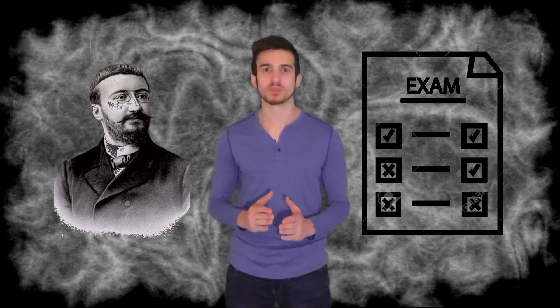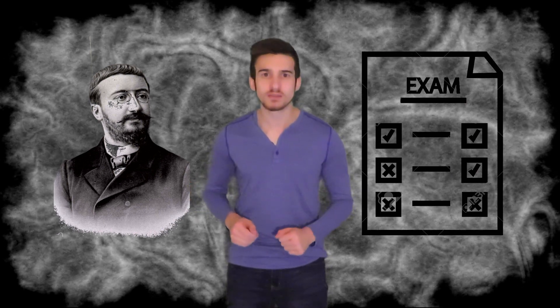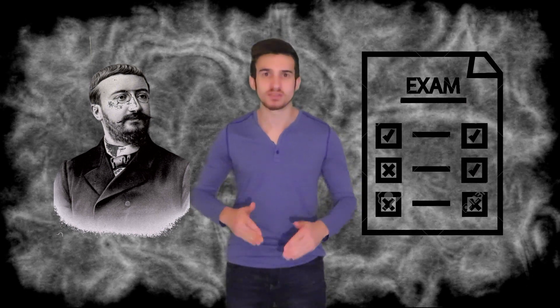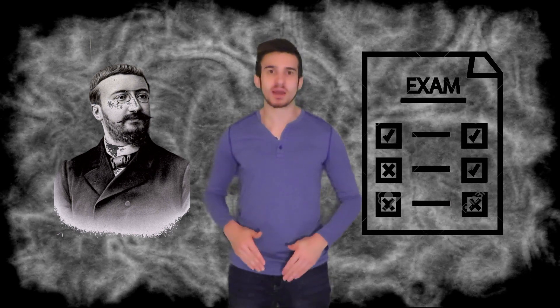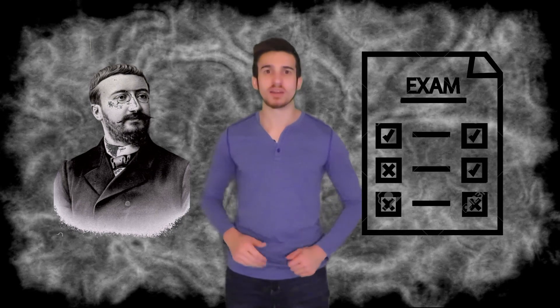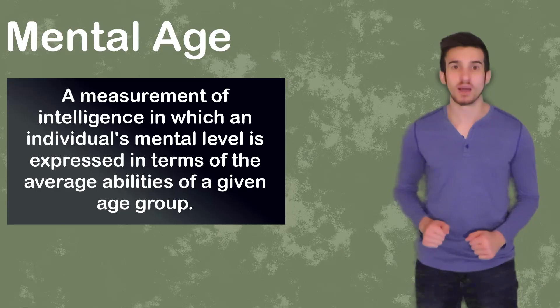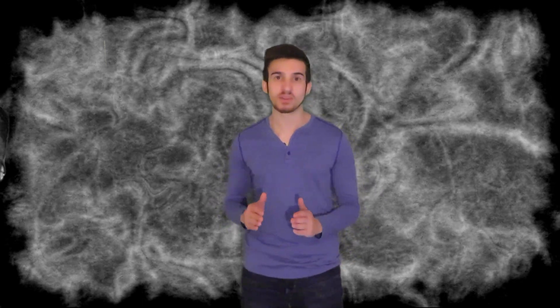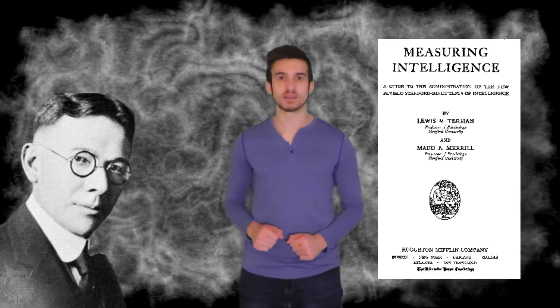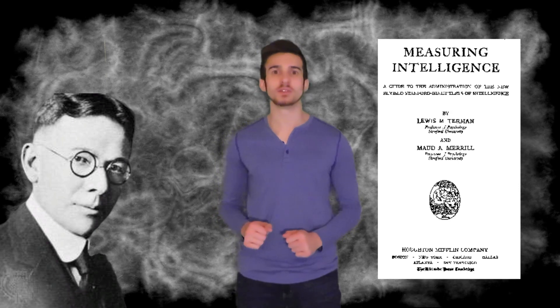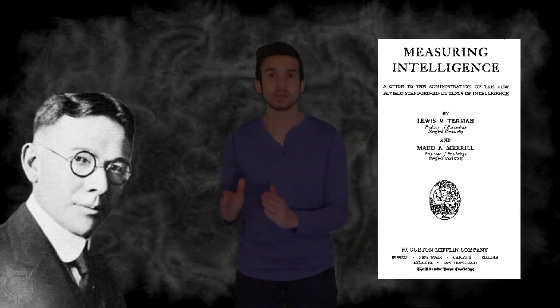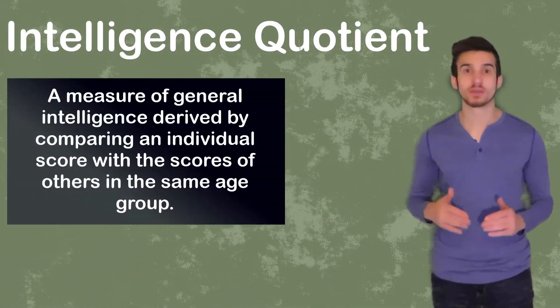Binet ordered the questions on his test by difficulty, so the harder questions were towards the end of the test while the easier questions were towards the beginning of the test. He found that brighter children performed like older children. What that means is a bright seven-year-old would be a seven-year-old who scores the same as an average nine-year-old, while let's say a less capable seven-year-old may score around the same as an average five-year-old. This is going to give Alfred Binet the idea of a mental age, which is just going to be the measurement of intelligence where the mental level of a child is expressed in terms of the average ability of a given age group. The popularity of Binet's test in the United States led to Stanford psychologist Lewis Terman to revise and develop a new version of the test, which he would refer to as the Stanford-Binet intelligence scale. First published in 1916, the Stanford-Binet test for many years was the standard of intelligence testing in the United States. The results of Terman's test give an intelligence quotient or IQ, which is going to be a measure of general intelligence, where we're going to compare individual scores with scores of others in that age group.